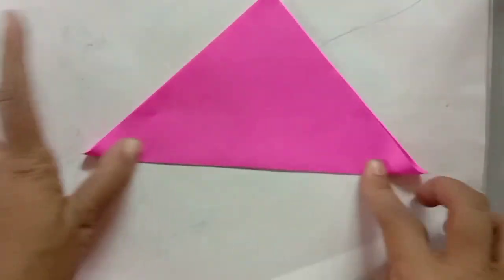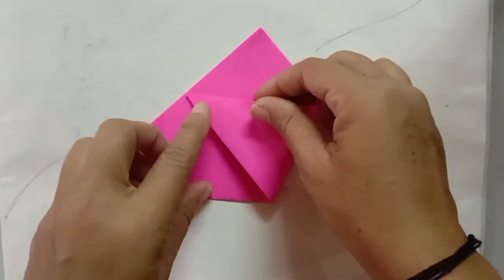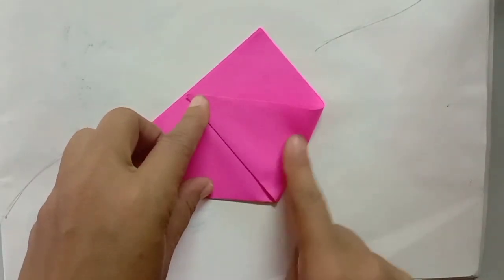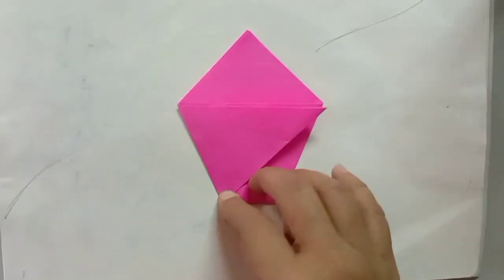Very first we have to make the craft. Here, step number one: half triangle shape fold. Step number two: one corner you have to fold to one side, then opposite side also.